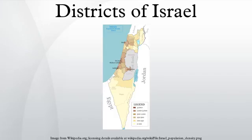There are six main administrative districts of Israel, known in Hebrew as Maezot and Arabic as Mentaka, and fifteen sub-districts known as Nafot. Each sub-district is further divided into cities, municipalities, and regional councils it contains.